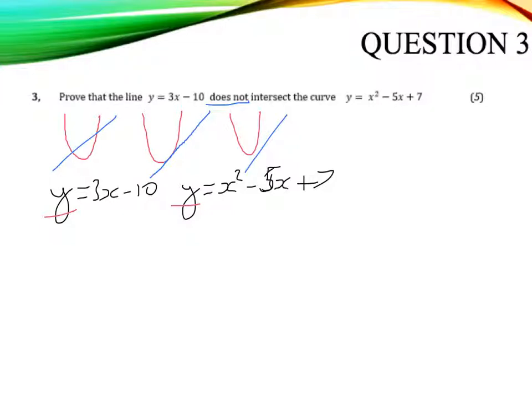So in this case, I've now got 3x minus 10 is equal to x squared minus 5x plus 7. Rearrange. I'm going to move everything from the left hand side over to the right, just to keep my positive x squared, and for no other reason. So I'm going to add 10 to both sides, and I'm going to take 3x from both sides, and I'm going to get 0 on this side.